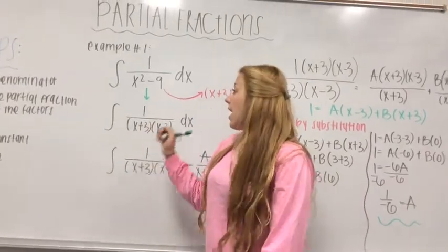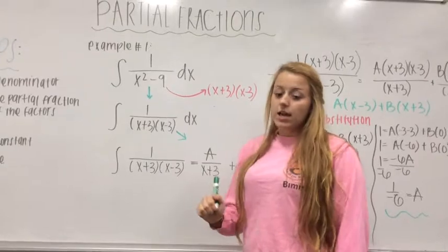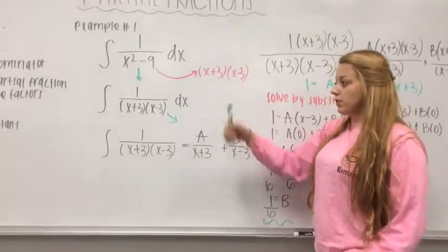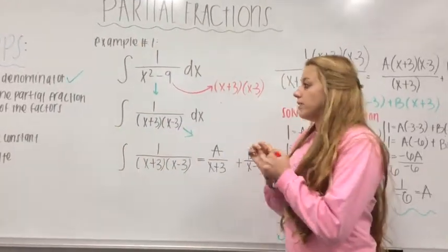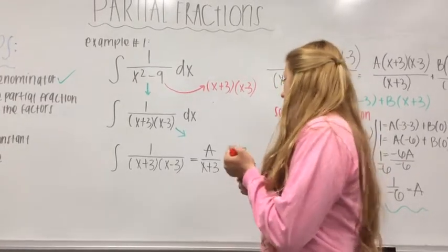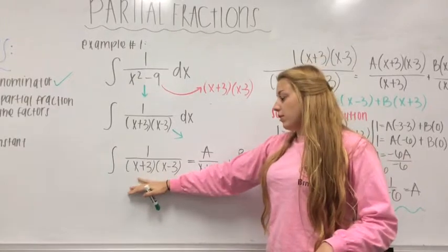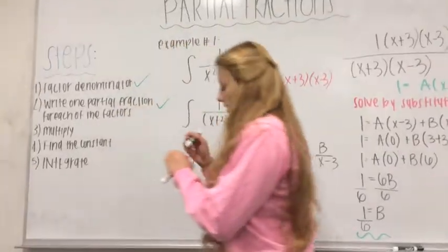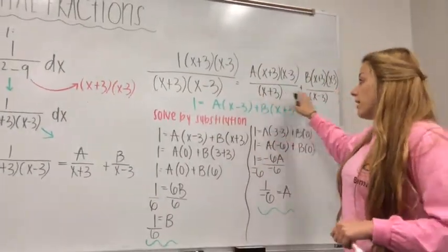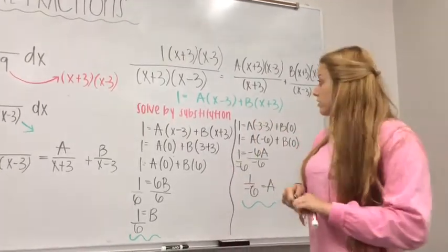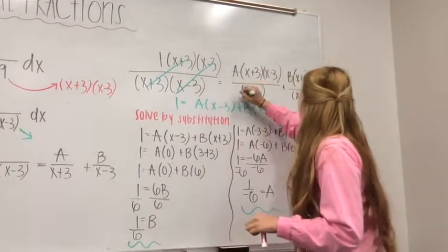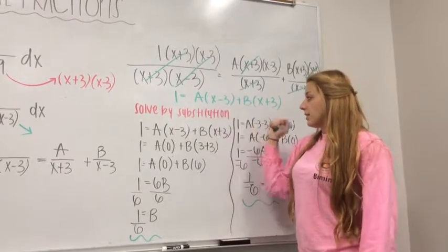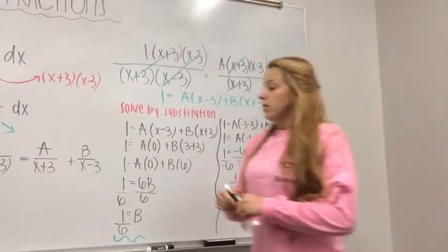So I'm going to do the first problem, and my integral is one over x squared minus nine. The first step is to factor the denominator. If we factor x squared minus nine, that gives us x plus three times x minus three. Now we can move on to the second step, which is to write one partial fraction for each of the factors. We're going to separate this equation using A and B, giving us two separate equations. Now we move on to the third step, which is to multiply everything by the denominator so that we can cancel all fractions. All the fractions cancel, and we're left with: one equals A times x minus three plus B times x plus three.